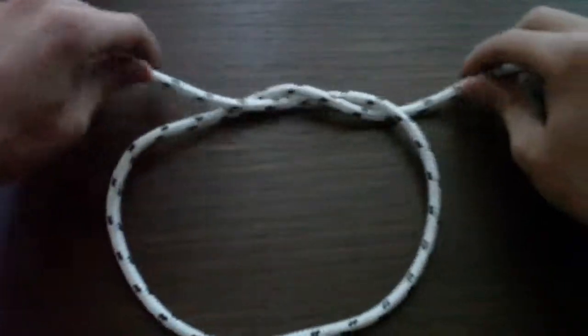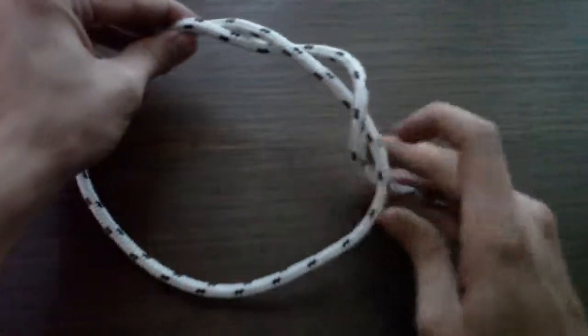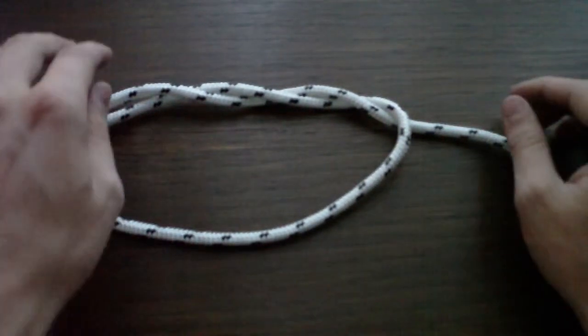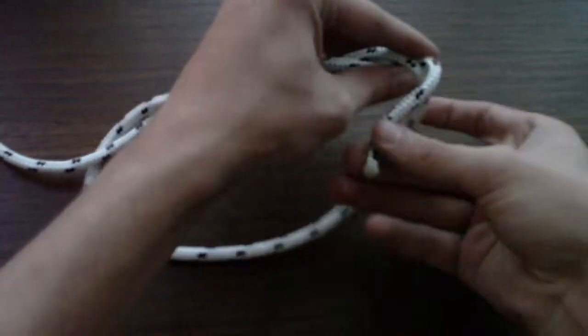Once we have an overhand knot, two. With two we can create the double overhand knot, but as we are doing the triple overhand knot, we are going to pass it a third time.